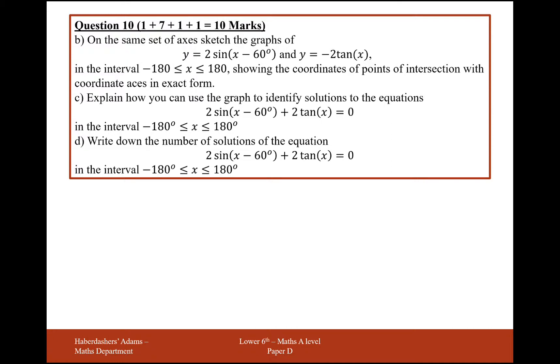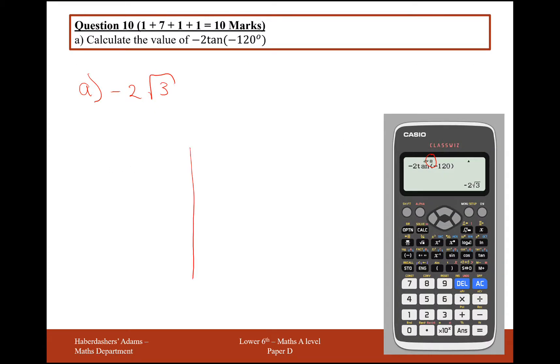Okay, part 2, a bit more difficult, 7 marks this one. On the same set of axes, draw the graphs of y = 2sin(x - 60°) and y = -2tan(x) in the interval -180 ≤ x ≤ 180, showing the coordinates of the intersection with the coordinate axes in exact form. Right, okay, so let's move back to the other page and have a go at some of these.